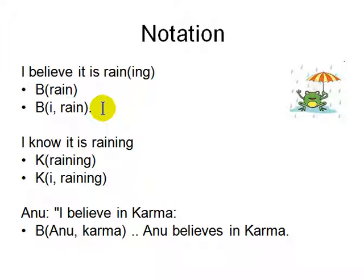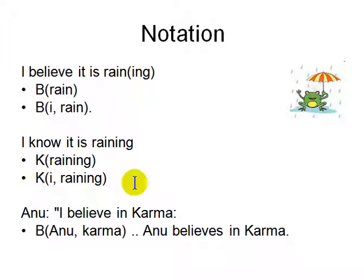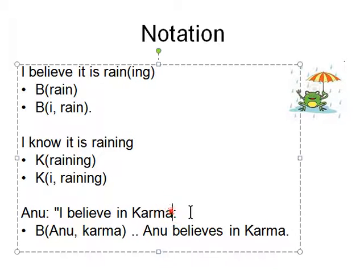Compare that with 'I know it is raining.' You write K for knowledge: K raining, and then I — for 'I know it is raining.' And then we can get into quite complex stuff.